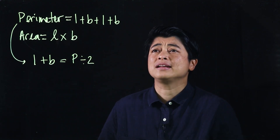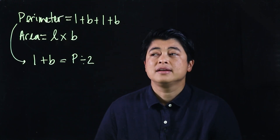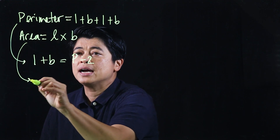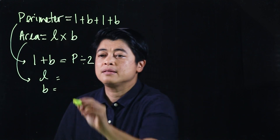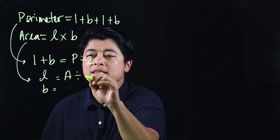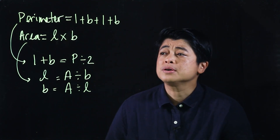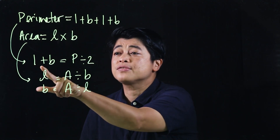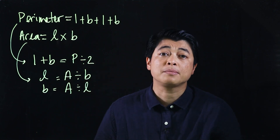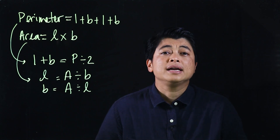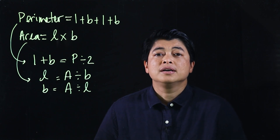We divide by two because there are two sets of length plus breadth. Similarly, if the length is missing from the area formula, it's area divided by breadth; if breadth is missing, it's area divided by length. Then subtract to find the missing dimension. It's a matter of working backwards now that the kids are in grade four.